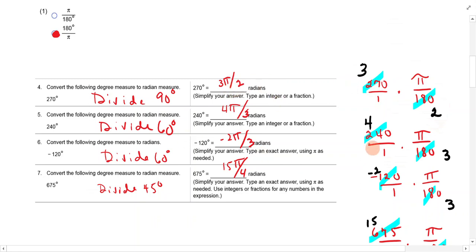For 240, 60 will go into both of those. It'll go 4 times and 3 times. So we have 4 pi over 3. Negative 120, 60 will go into both of those. So we have negative 2 and 3. So it's negative 2 pi over 3.